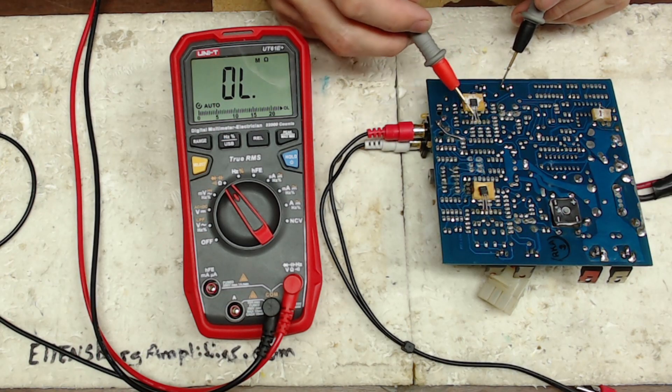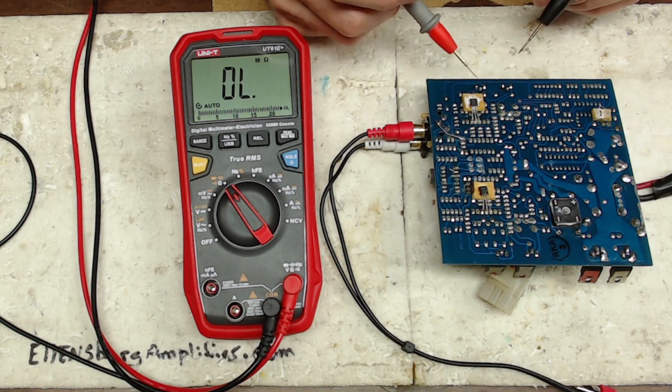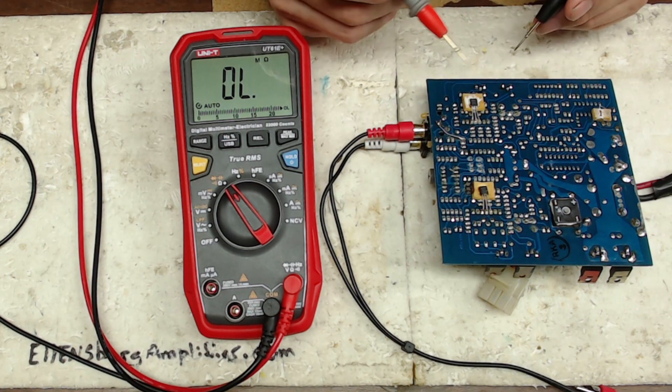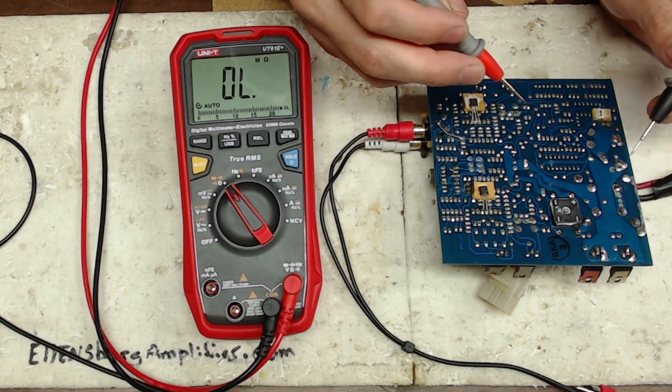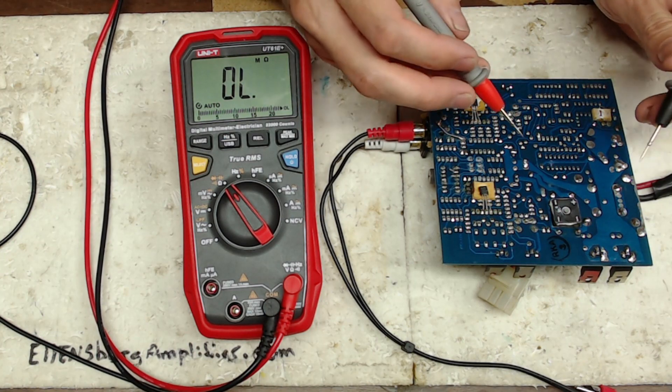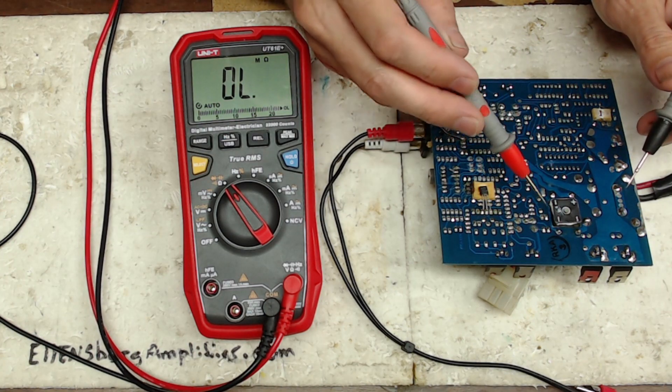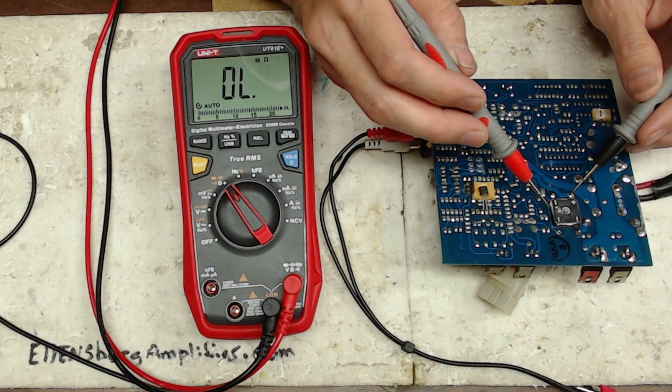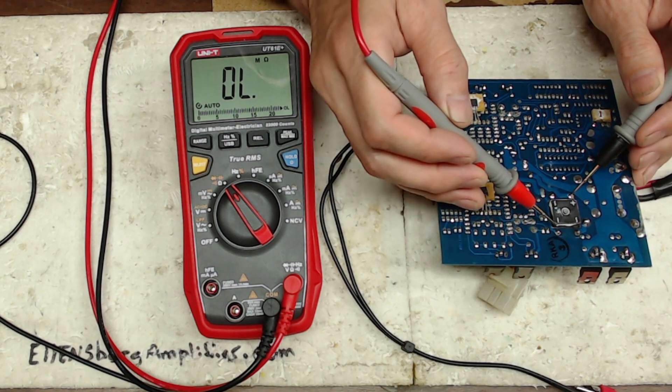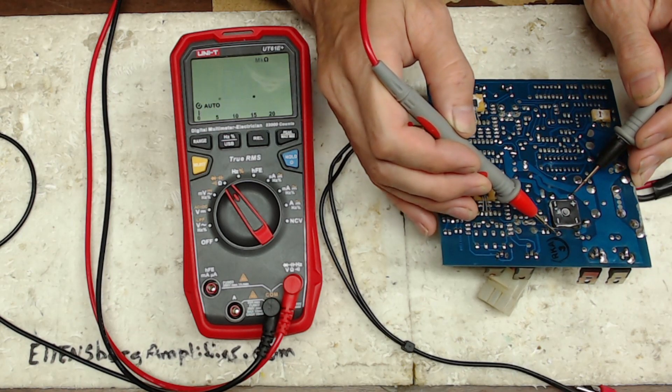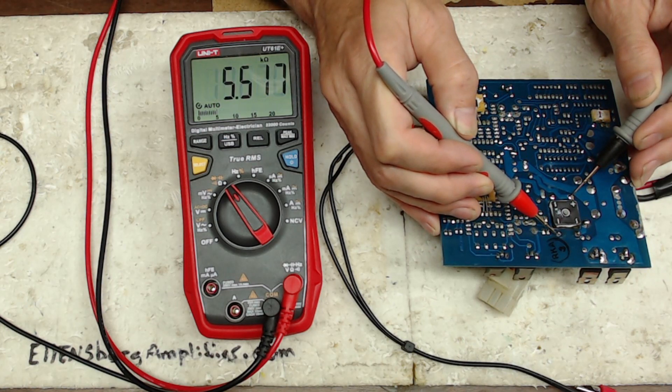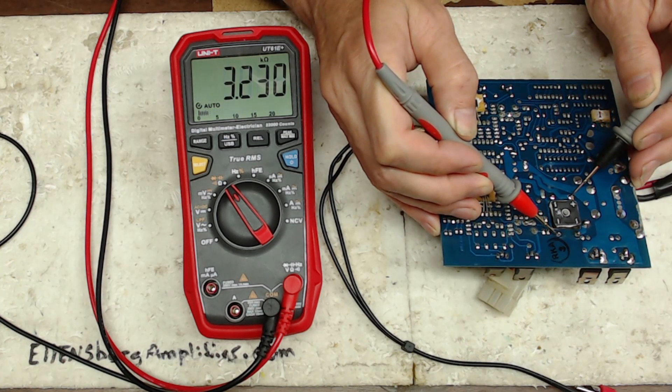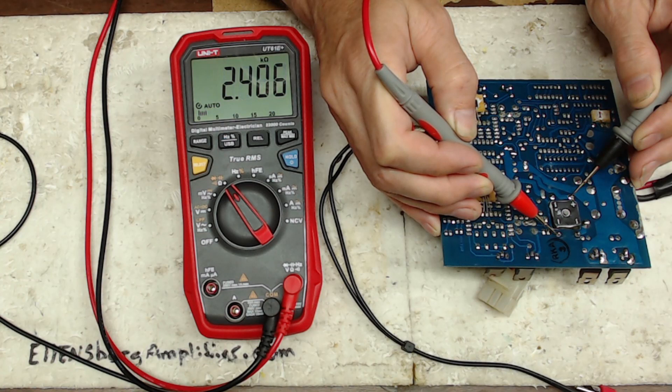So what I started doing was checking the resistance of the plus minus rails here. When I was probing the rails I was like something's very strange about the way this is responding, like there's a short somewhere that's discharging this rail quite rapidly.